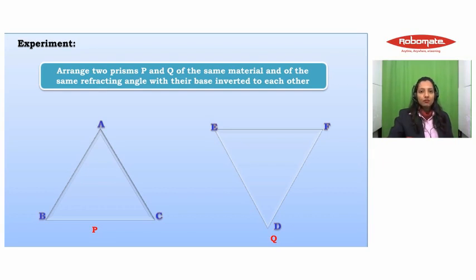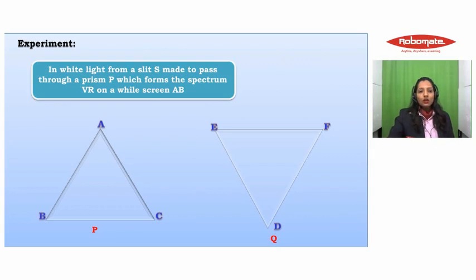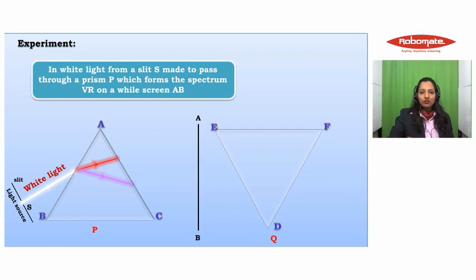White light from a slit is made to pass through the first prism P, which forms the spectrum from violet to red, and it is made to fall on a white screen AB.